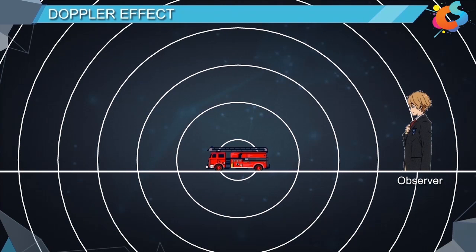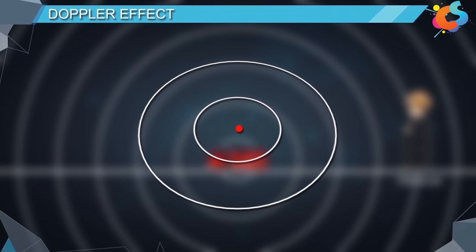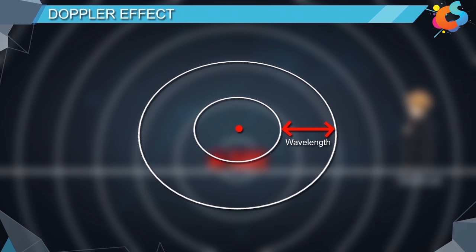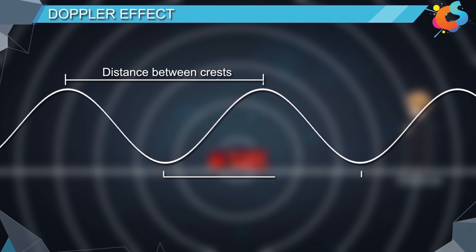Before continuing the topic let's have a quick glance about two important terms: wavelength and frequency. The wavelength is the distance between two wave fronts. It is also the distance between crest of one wave to the crest of the adjacent wave, or the distance between trough of one wave to the trough of the adjacent wave.